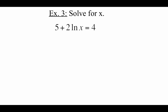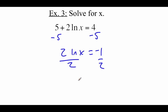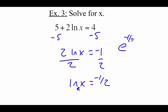With this next example, we're not going to be able to use a one-to-one property because we've only got a single natural log happening. I still like the idea of trying to get this x all by itself, so I'm going to subtract the 5 over to the right-hand side. We get 2 times the natural log of x equals negative 1. Divide both sides by 2, we get the natural log of x equals negative one-half. We can't use a one-to-one property here, but we can rewrite this thing as an exponential equation. Remember natural logs are base e logarithms, so it would be e to the negative one-half power equals x, and then we could just type this into our calculator.